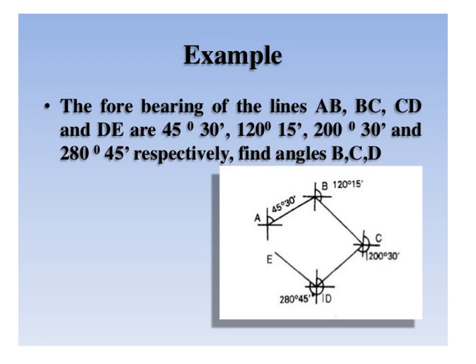This slide refers to the problem based on finding the angles when the fore bearings of lines are given. In the given problem, four lines are given: AB, BC, CD and DE. The bearings are 45 degrees, 120 degrees, 200 degrees and 280 degrees respectively. You are supposed to calculate the angle BCD.